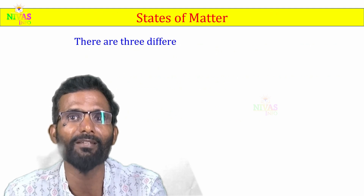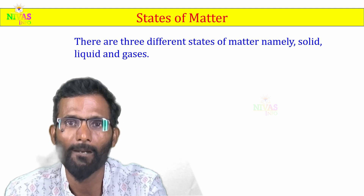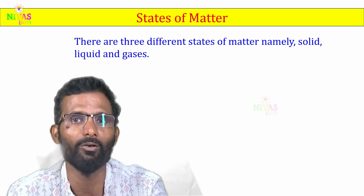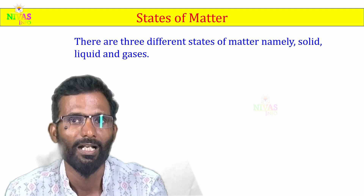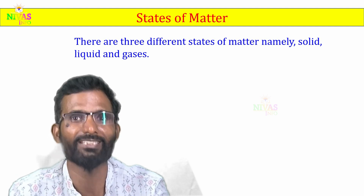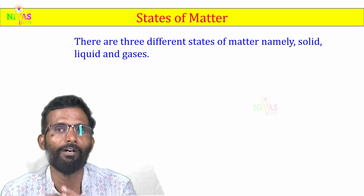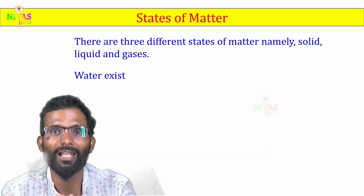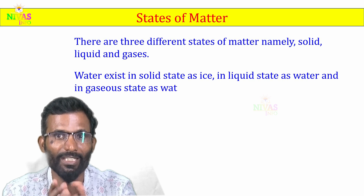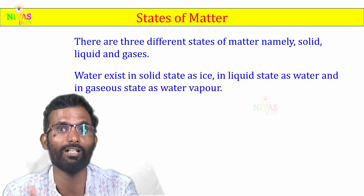There are three different states of matter, namely solid, liquid, and gas. Based on properties, matter is mainly divided into three categories. We will discuss this in the next session. In this session, we will discuss water. Water exists in solid state as ice, in liquid state as water, and in gaseous state as water vapor.